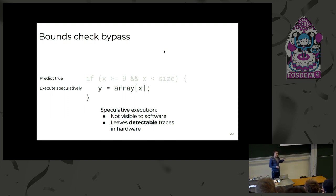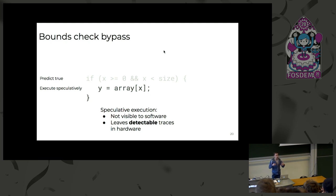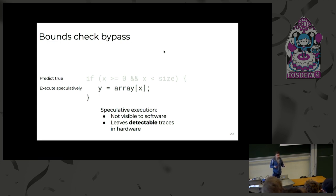However, the problem is that even though speculative execution is not visible to software, it still leaves certain traces on the microarchitectural level. It might leave traces in the caches, or start execution units like the AVX unit during speculative execution. And attackers who know about this feature could derive the results of speculative execution — for example, the result of this memory access — from those traces. So it is possible to do.